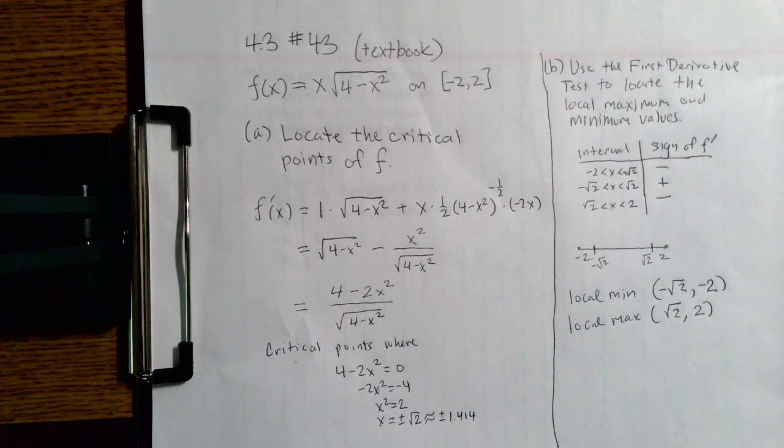Now there's a part C to this problem that asks us to identify absolute max and min. We've done a lot of the work to get there because to find absolute max and min, we need to find the critical points. We've done that.